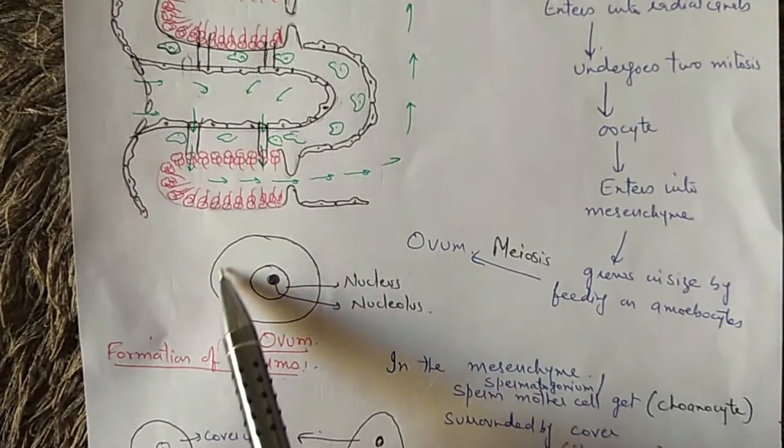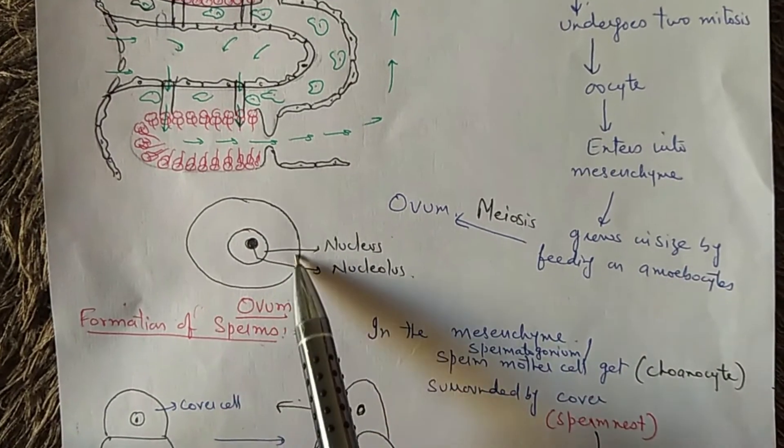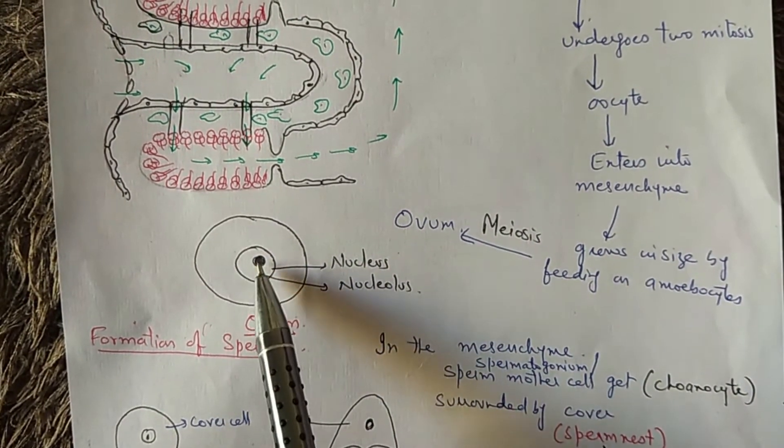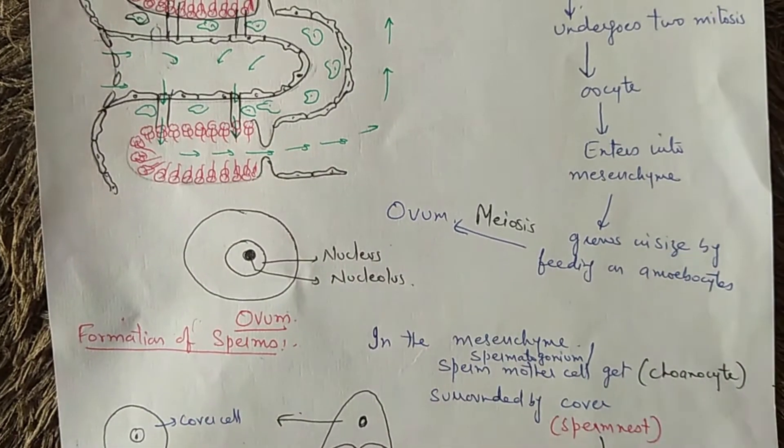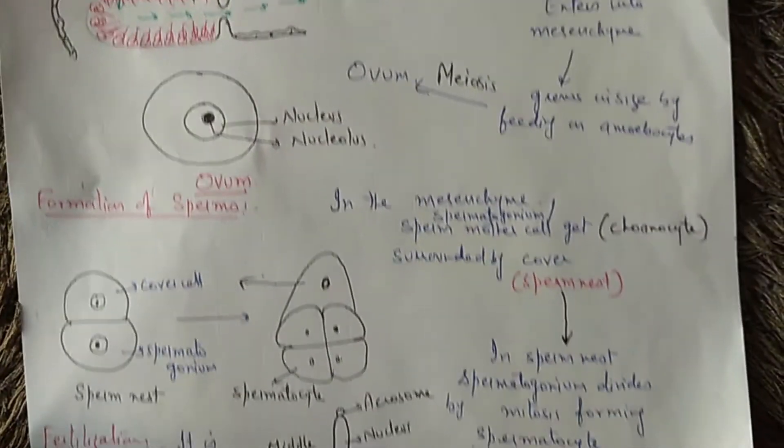A mature ovum is almost a rounded structure having well-defined nucleus and nucleolus in it. So, this is how egg is formed within the mesoglia.